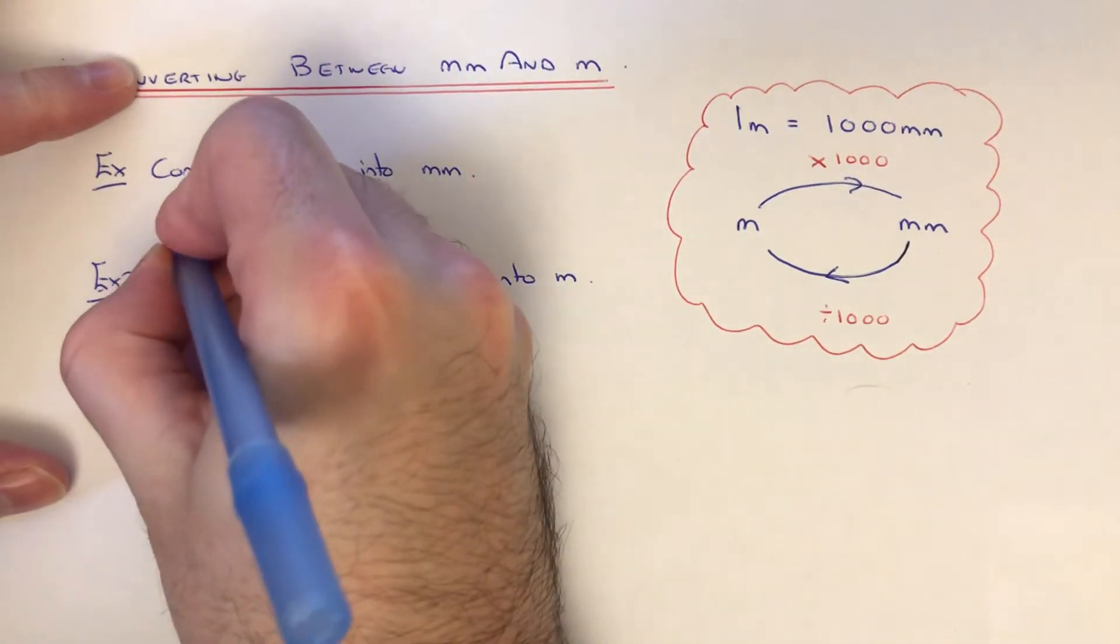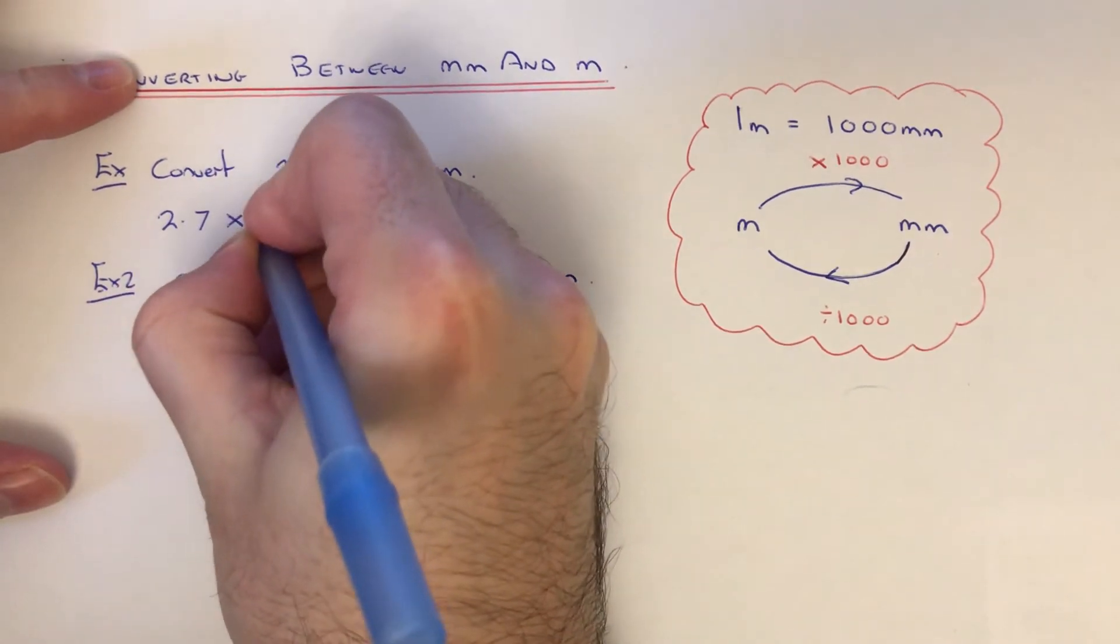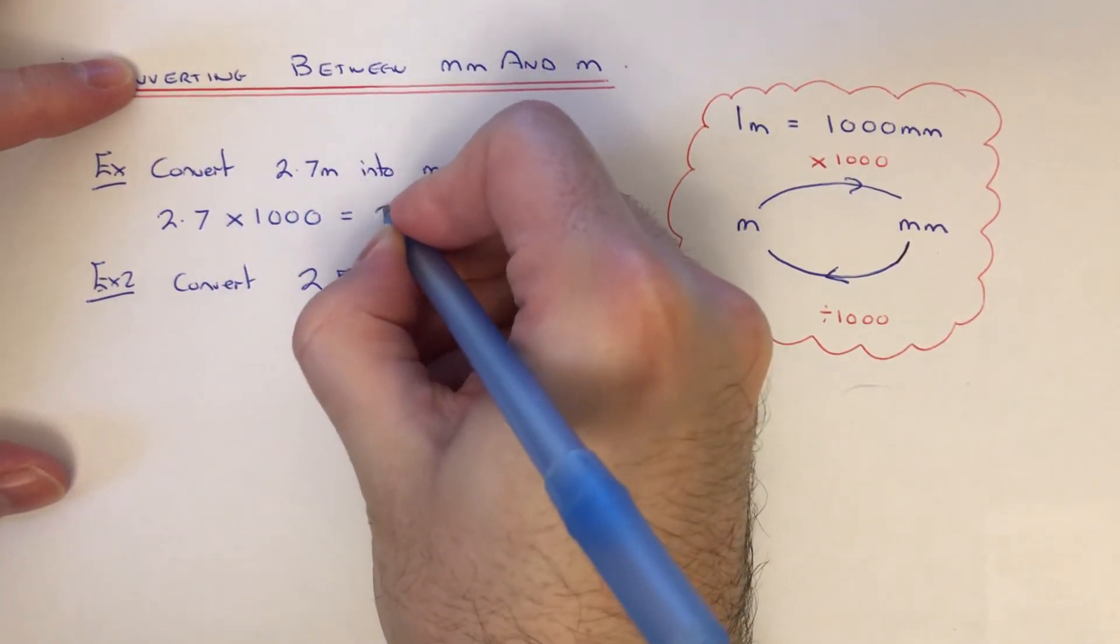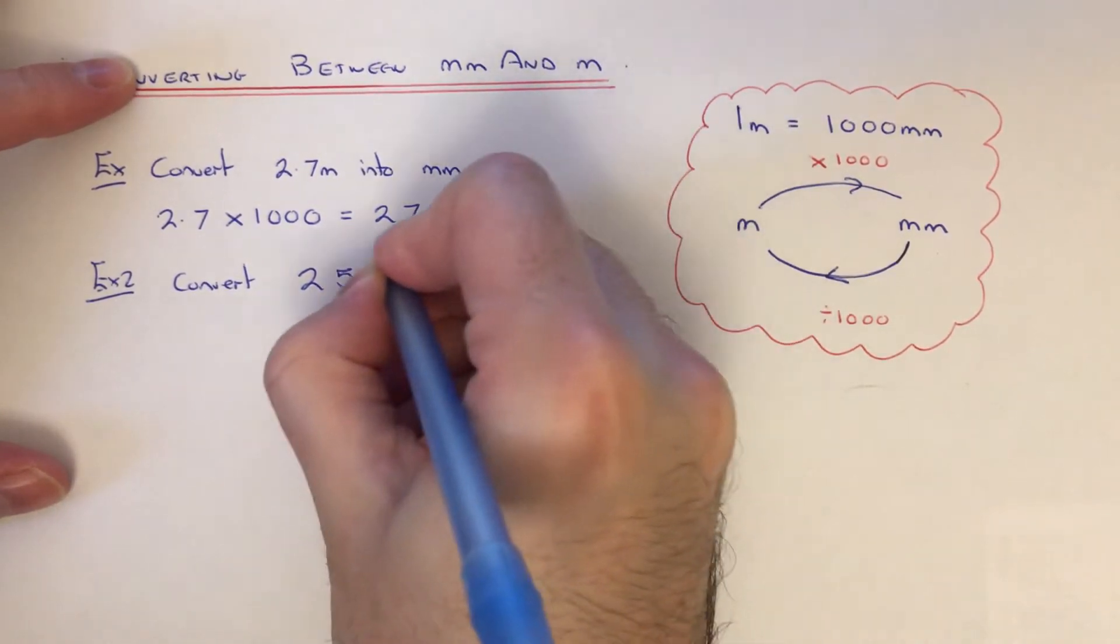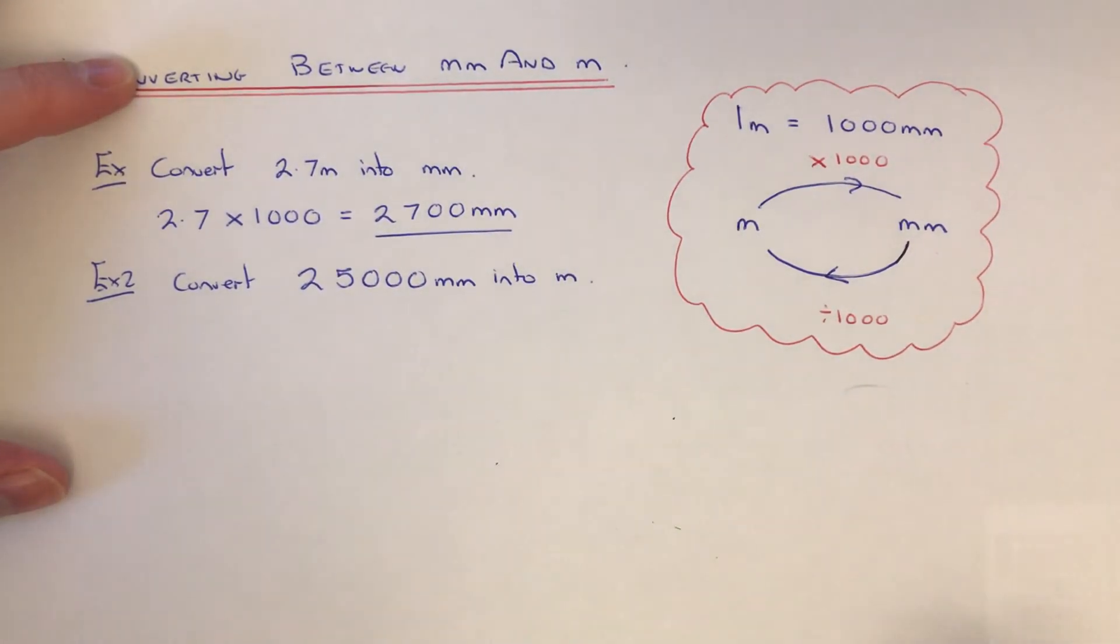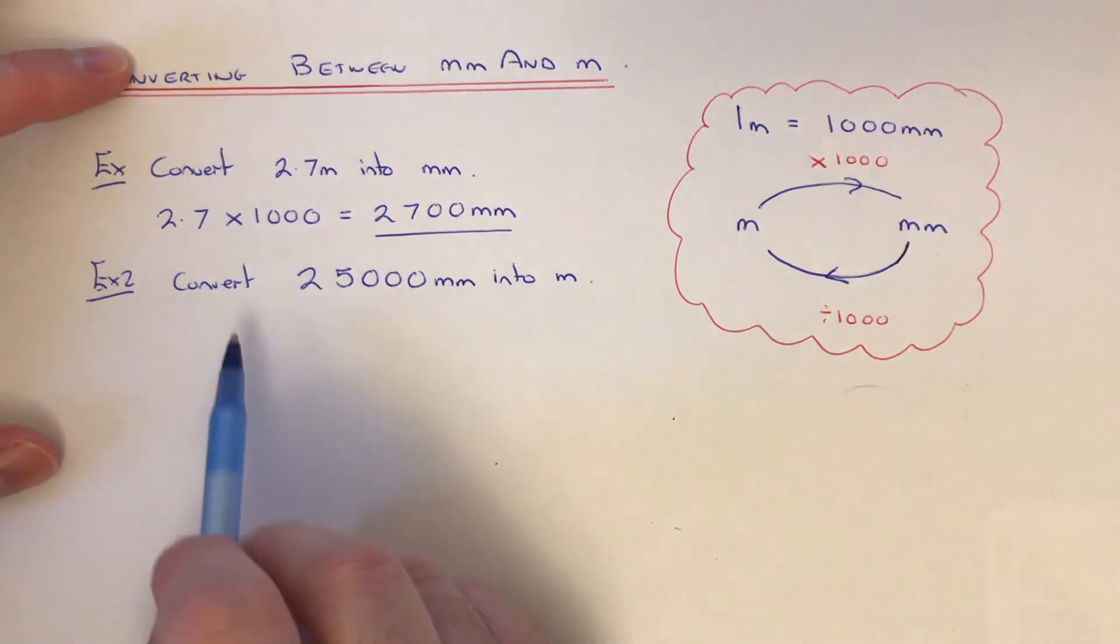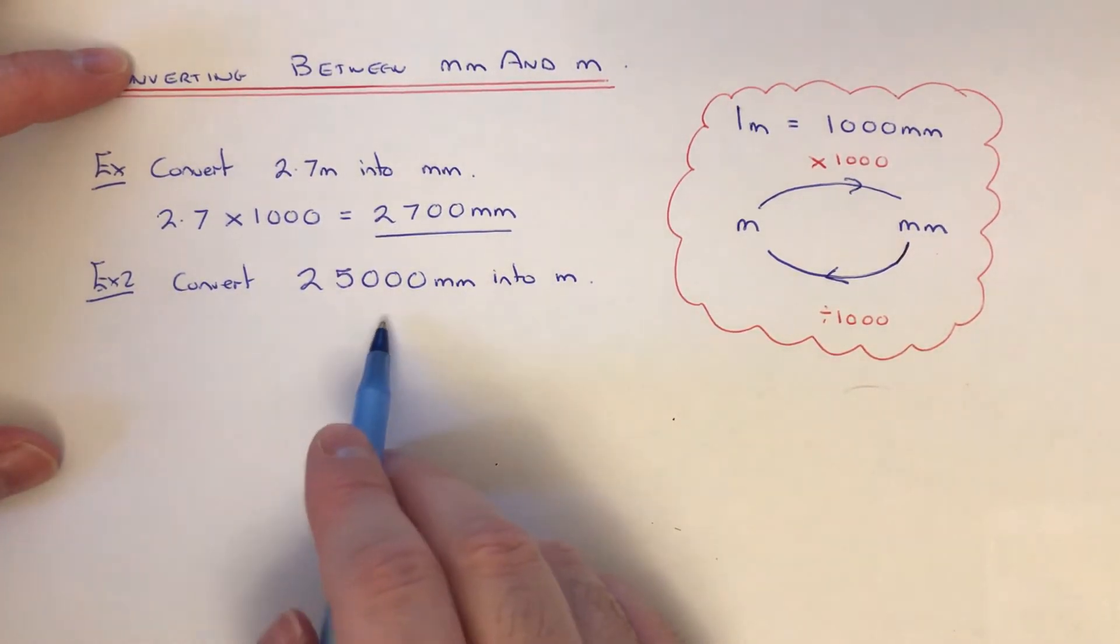So if you write your 2.7 down first and times that by a thousand, that will give you two thousand seven hundred millimeters. So let's look at the second example. This time we've got to convert 25,000 millimeters into